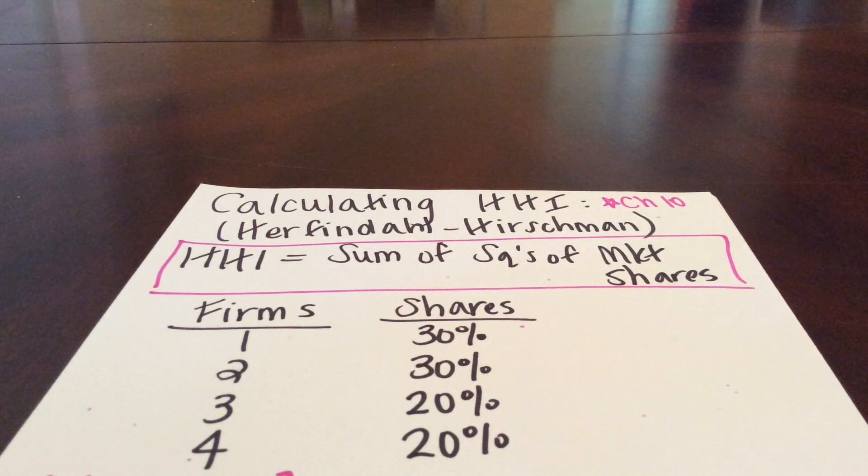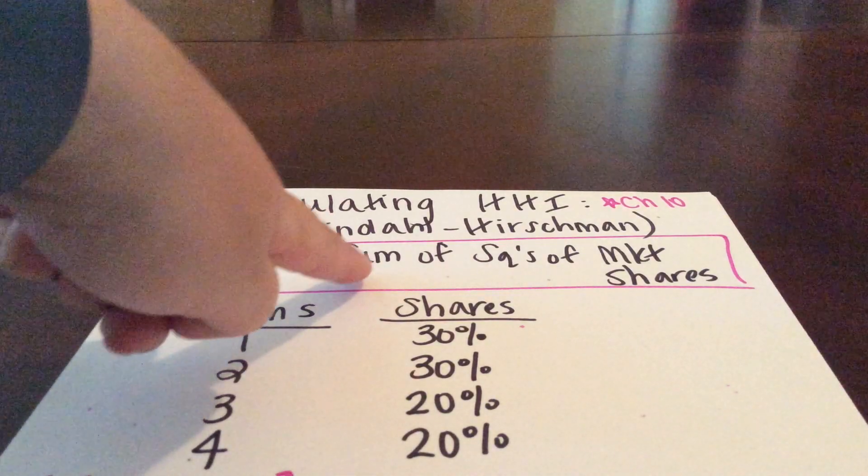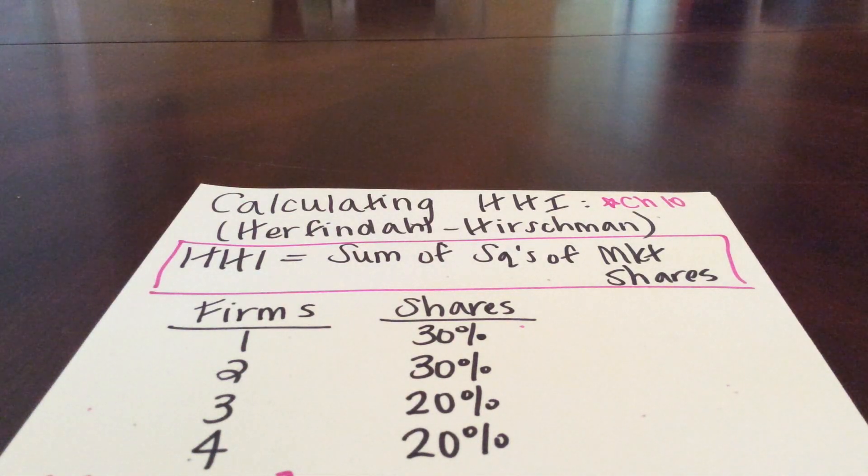I'm going to show an example of calculating our HHI, or the Herfindahl-Hirschman Index. This is another method, similar to the four-firm concentration ratio, that we can use to determine how competitive a market actually is. To calculate the HHI, it's simply the sum of the squares of the market shares for each of the firms in our market.